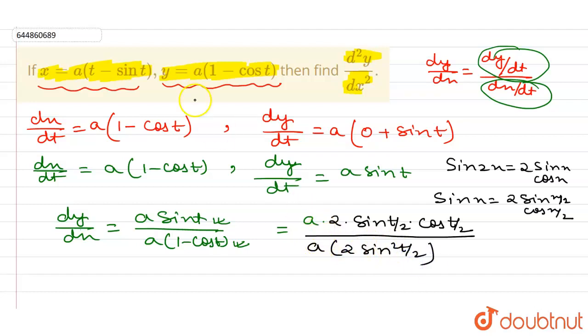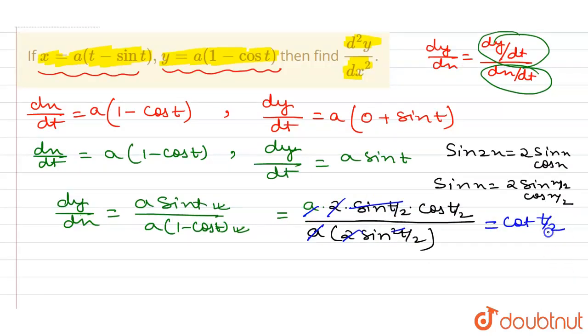So from here, a and a cancel, 2 and 2 cancel, sin(t/2) cancels, so the remaining part is cot(t/2). And I have to find d²y/dx².